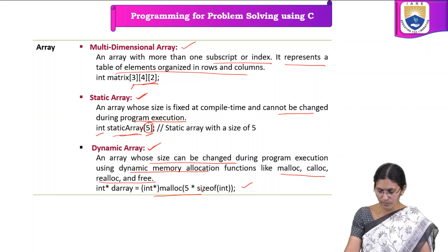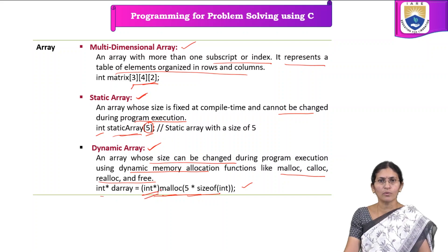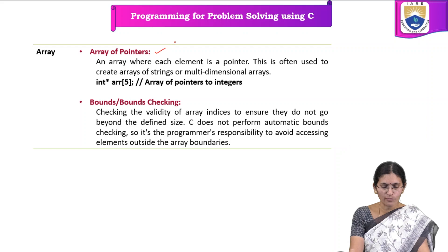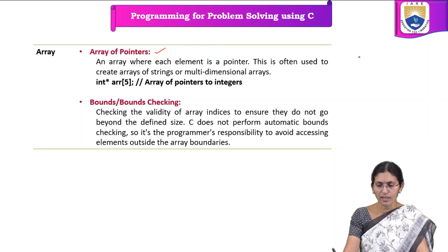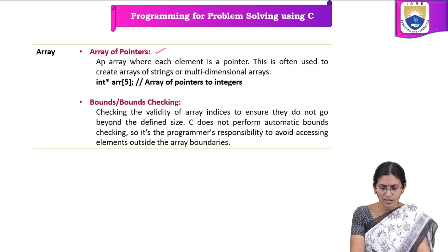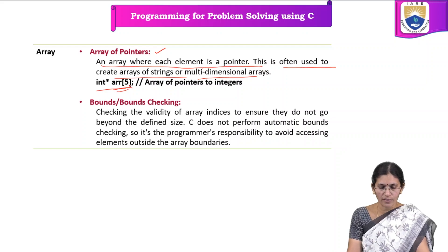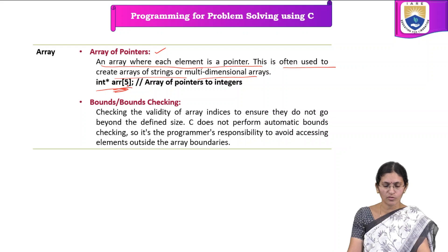By using these different functions, we can change the array size dynamically. The malloc function allocates the specified amount of memory and returns a pointer of the given type. Array of pointers — an array of pointers stores the address of other elements, where each element is a pointer. It is often used to create arrays of strings or multidimensional arrays. For example, this is how we declare an array of pointers to integers of size 5, where each element stores an address.